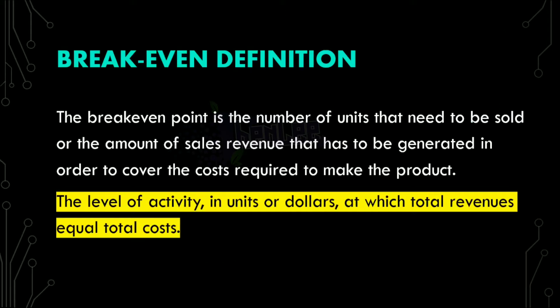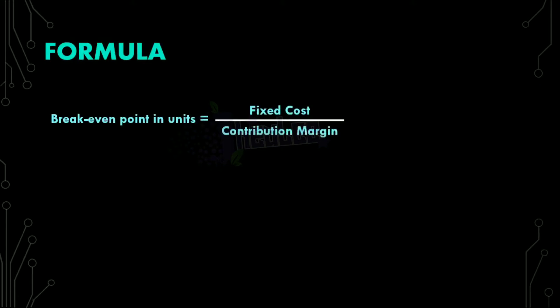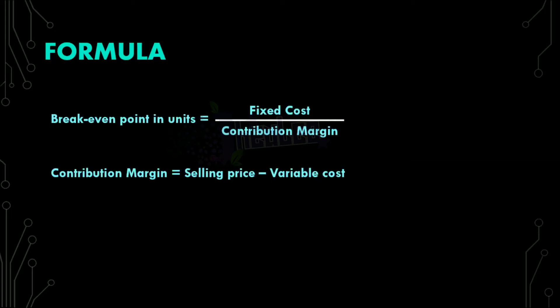We're now going to look at the formula for calculating break-even points in units. That is fixed cost divided by contribution margin. Contribution margin is calculated as selling price minus variable cost. So basically, break-even point in units is fixed cost divided by SP minus VC.